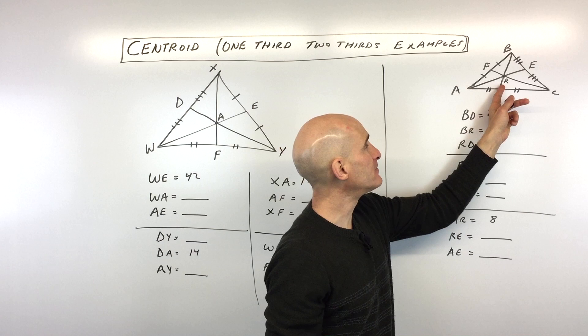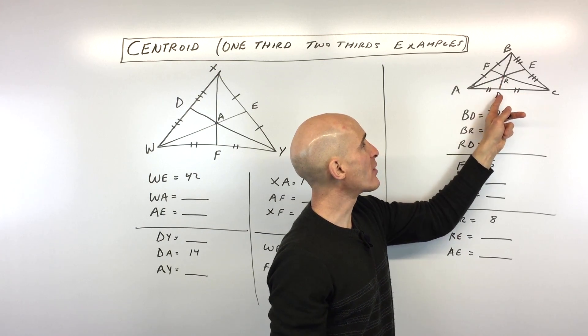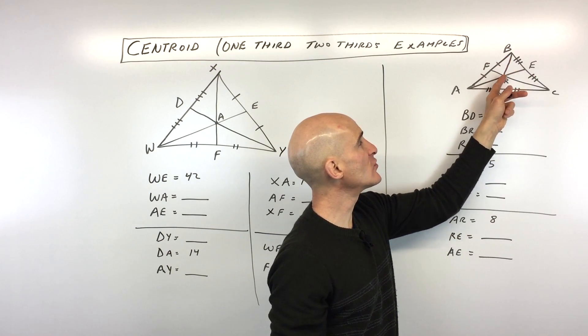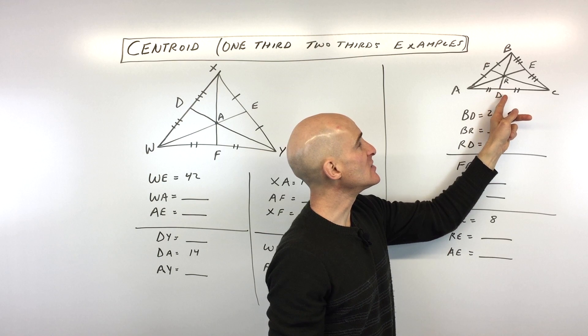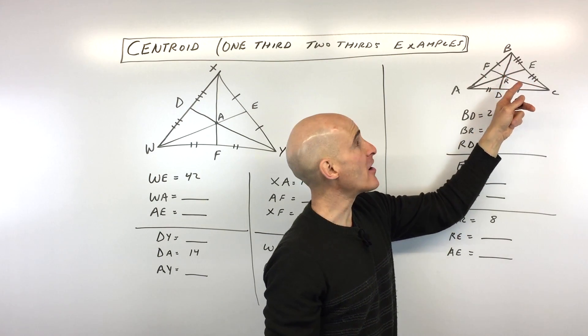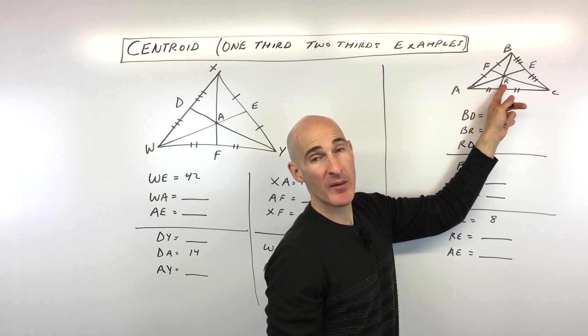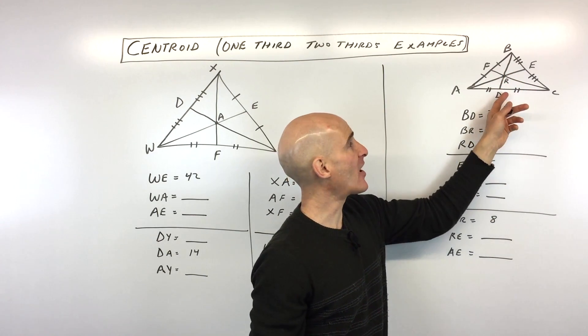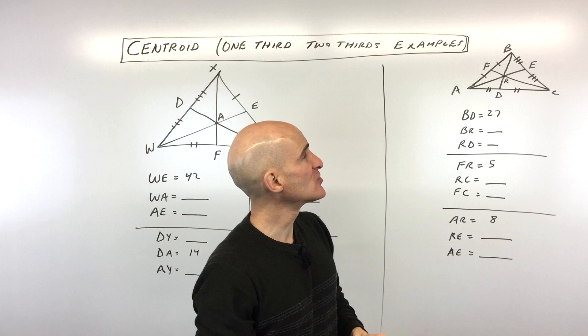And the other thing you want to pay attention to is that because RD is one-third of the median and BR is two-thirds, if you know RD, you can double that to find BR. Or if you know BR, you can multiply by one-half to find RD. So let's go through some examples and you'll see how this works.